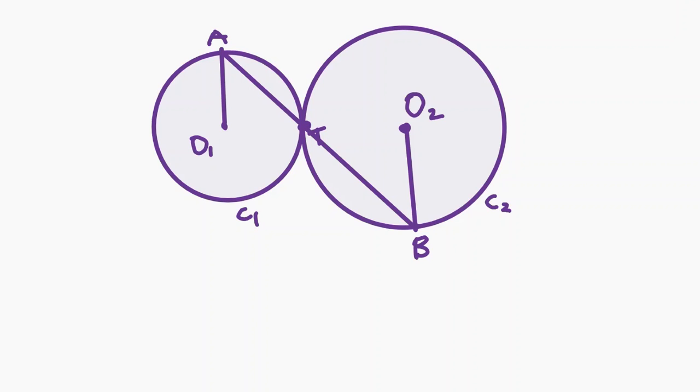Because there is a center of homothety at T, we know that triangles O sub 1 A T and O sub 2 B T are mapped to each other through homothety. And since their side lengths are all in a specific ratio, they are similar by SSS similarity.